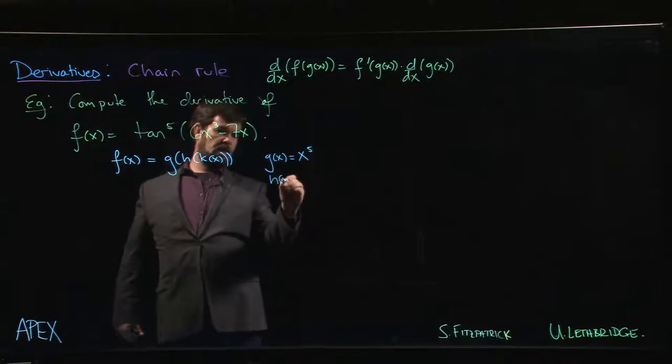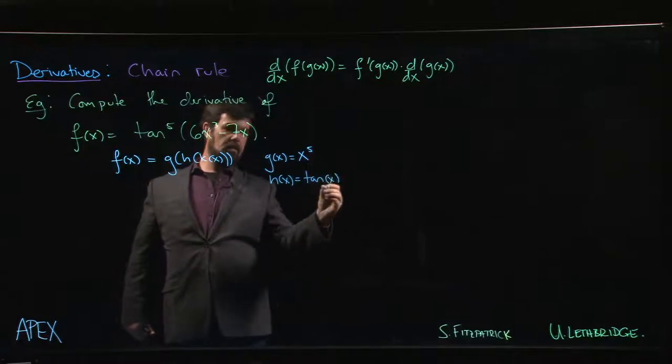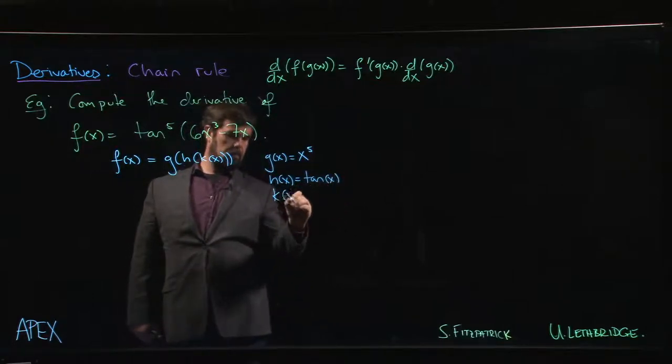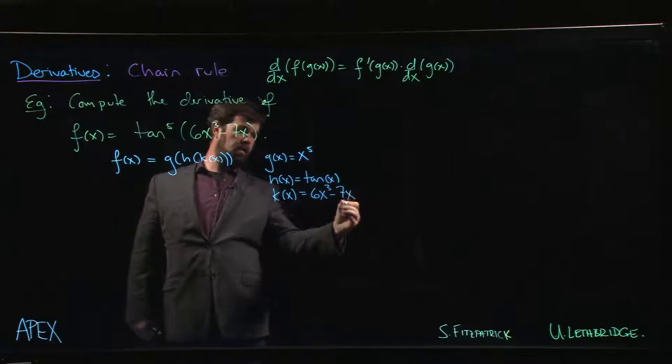The intermediate function is the tan function, and the inner function is this polynomial, 6x cubed minus 7x.